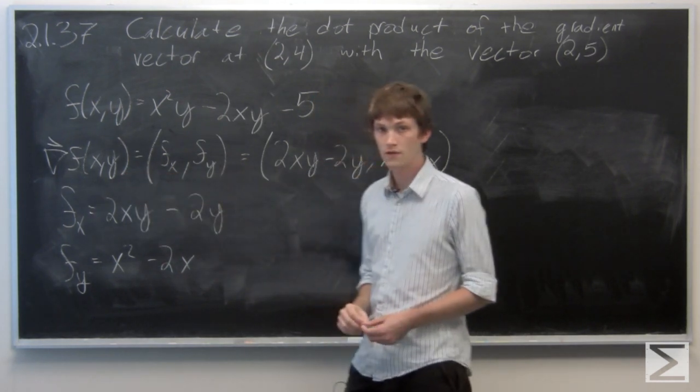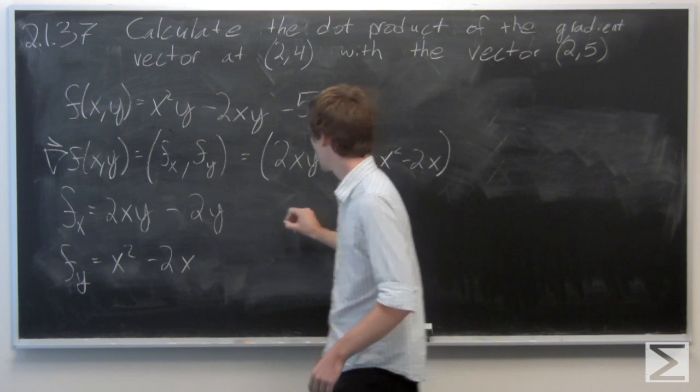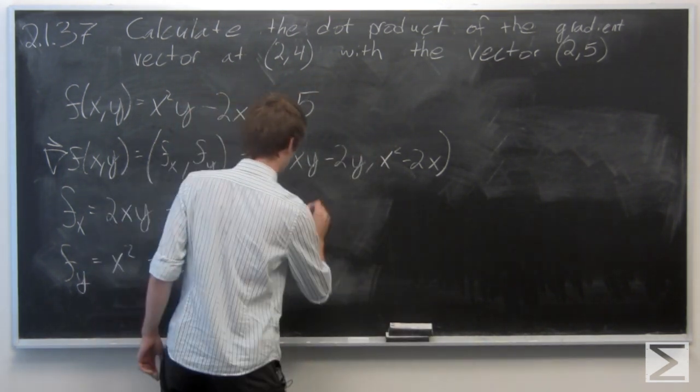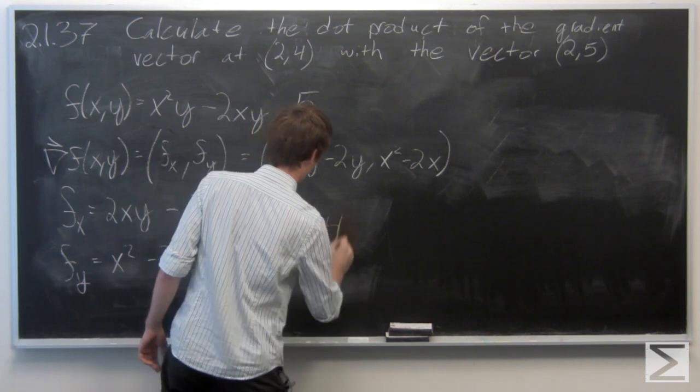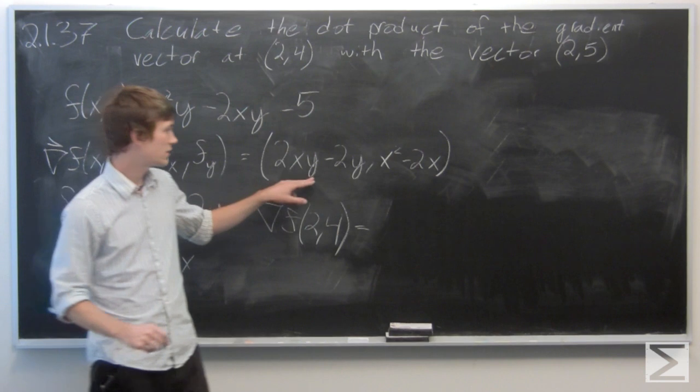OK, so now we're going to want to find the gradient vector at the point (2,4). Plug in 2 for x and 4 for y.